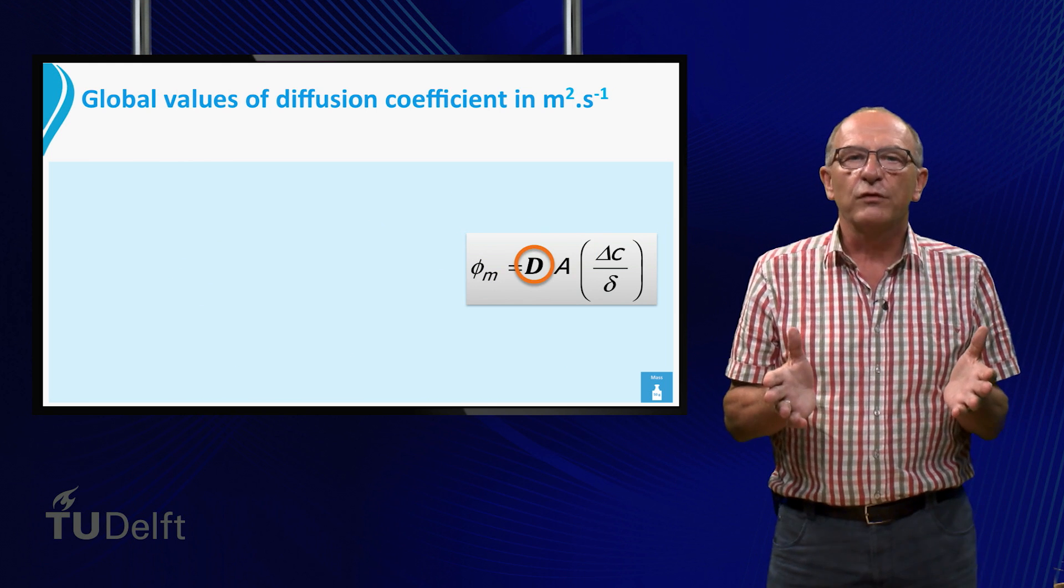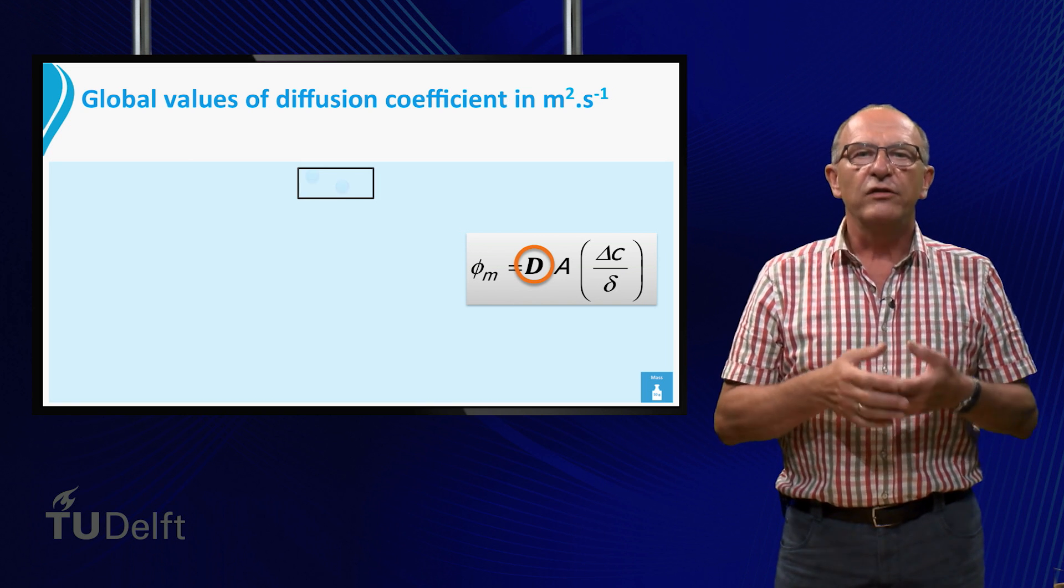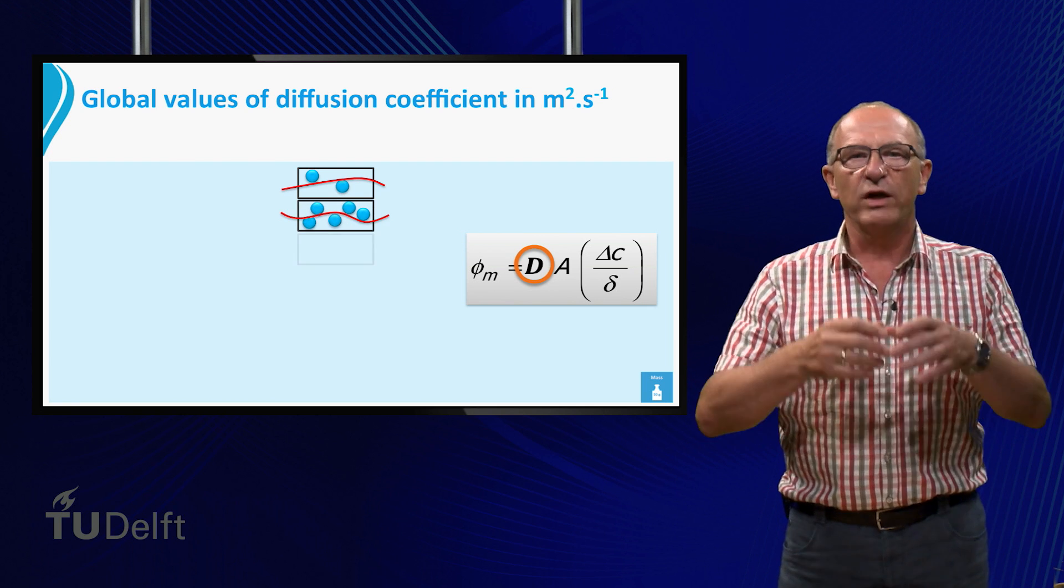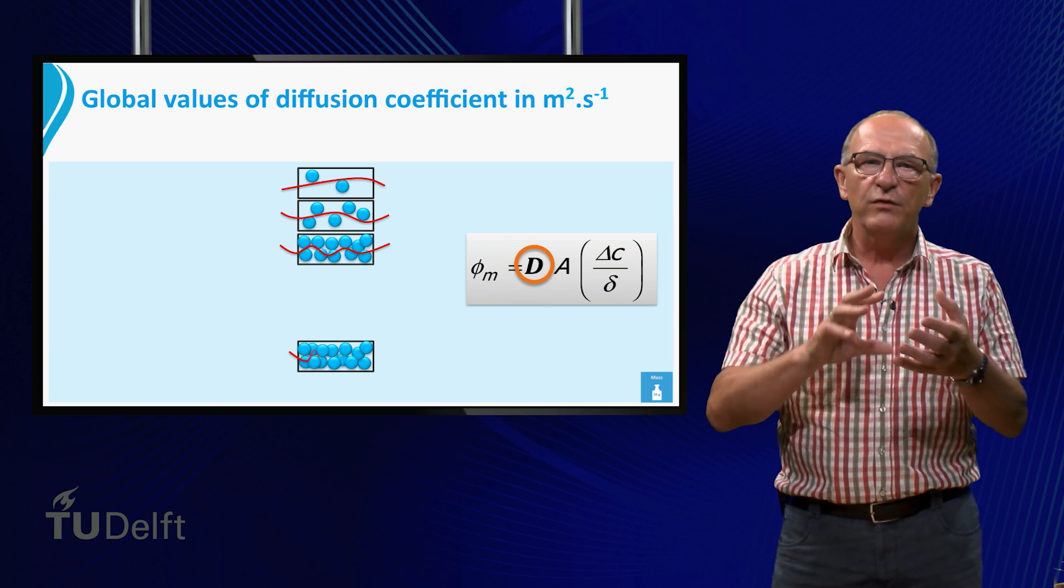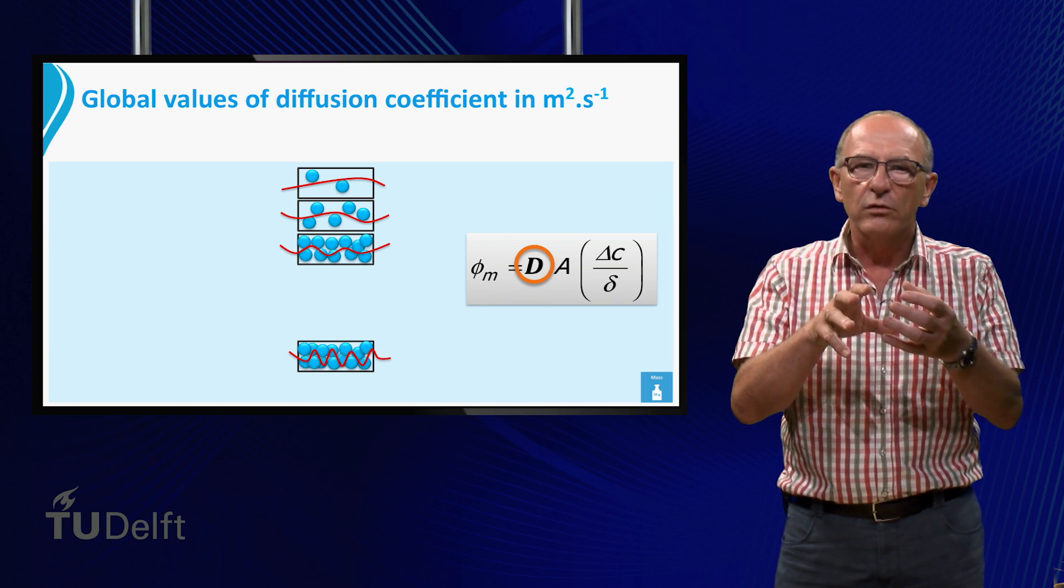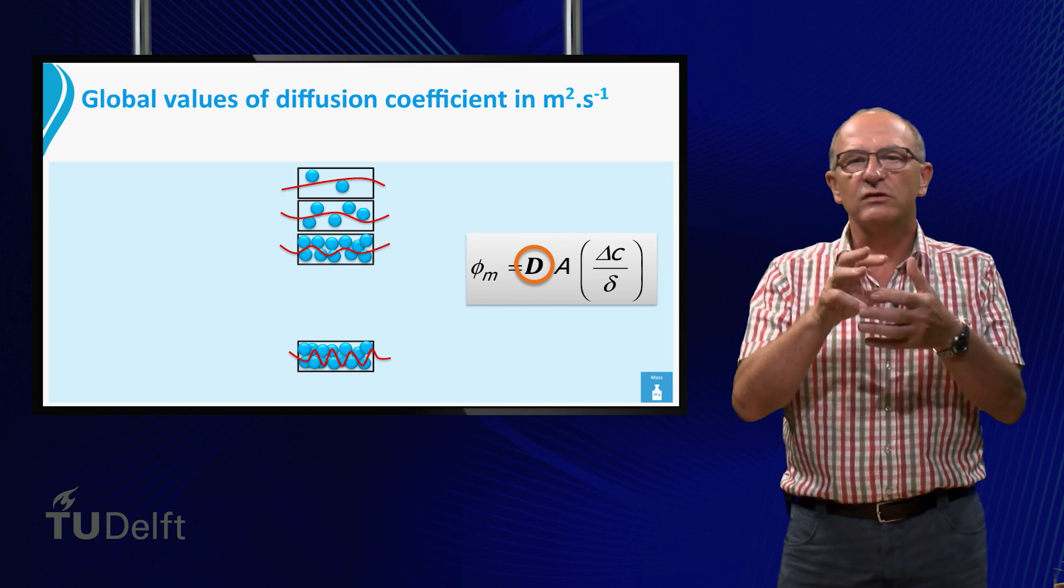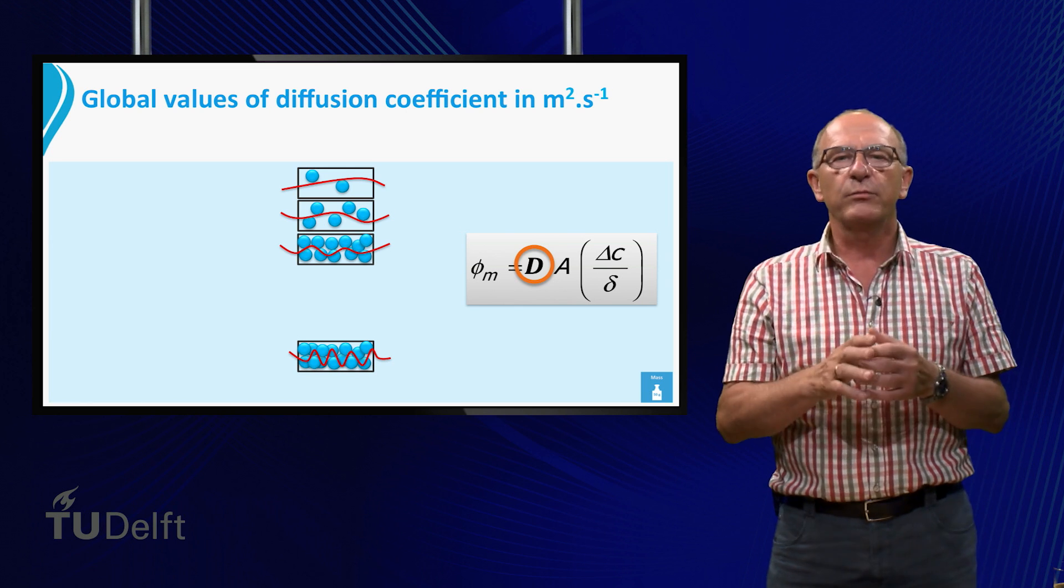Well what's the diffusion coefficient? You could see it as follows. The diffusion of a gas in a gas is quite fast because there is space enough between the molecules. But if we have diffusion of air in water, there is less space, so the value becomes lower. And if we have a species in a solid, it becomes much lower.